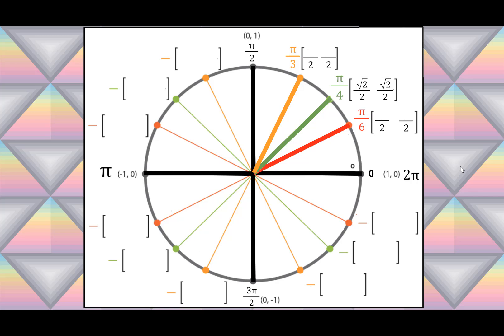If you can't remember which value is x and which is y, go ahead and build a reference triangle. Its base represents the x value and the height represents the y value. It's clear that the base is longer than the height — √3/2 is greater than 1/2 — so the x value at π/6 is √3/2 and the y value is 1/2. For π/3 we just flip those: the x value is 1/2 and the y value is √3/2.